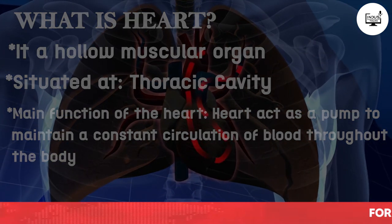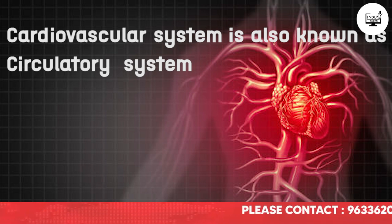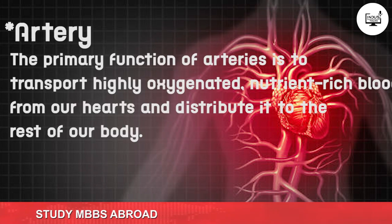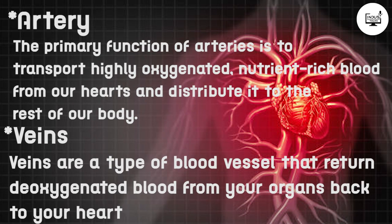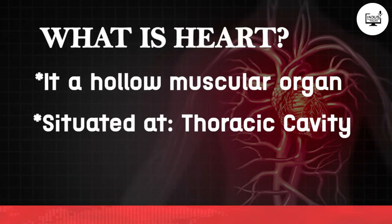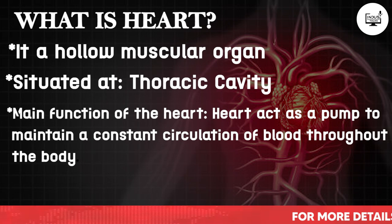The Cardiovascular System is called the circulatory system. It consists of the heart and blood vessels — arteries, veins, and capillaries. Arteries carry oxygenated blood, also called pure blood. Veins carry deoxygenated blood. The main function of the heart is to maintain constant circulation of blood throughout the body.